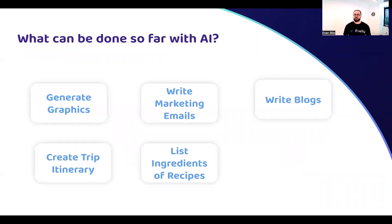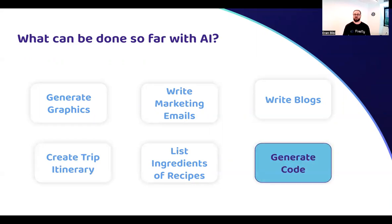So what else? It can generate images, but it can also write marketing emails, write blogs, plan our next vacation, and even create the ingredients list for a dish I'd like to cook this evening. But what makes it more fascinating is that AI can generate code. And if we take this amazing capability and incorporate it into the DevOps day-to-day work, we can find some very nice use cases to leverage AI for our benefit.